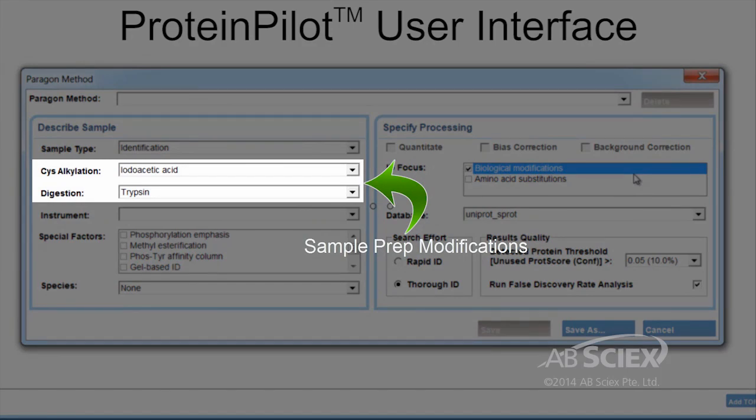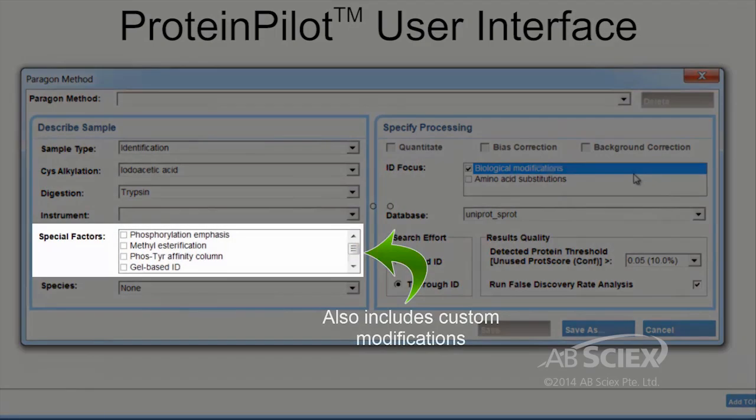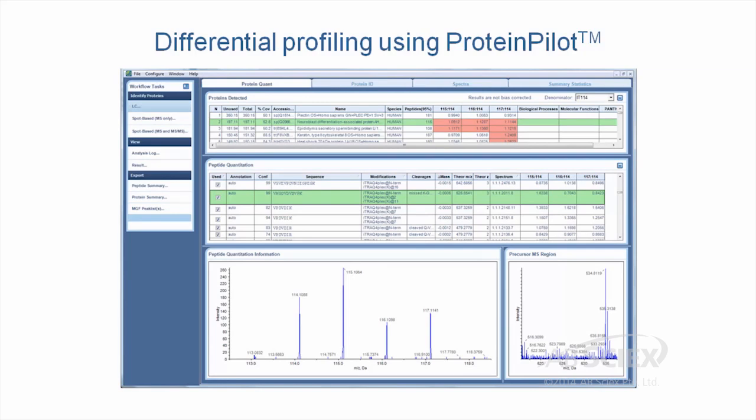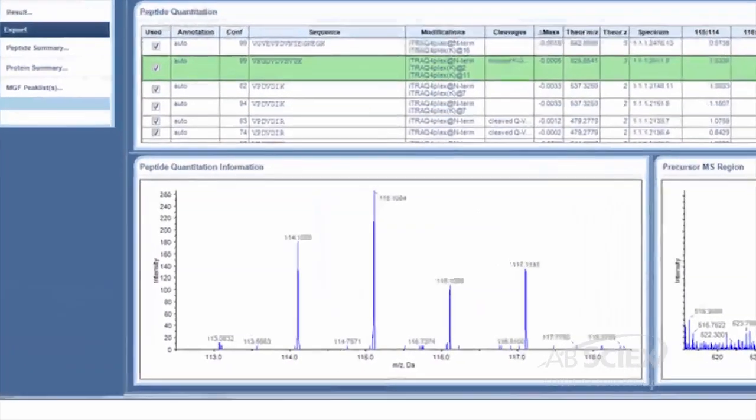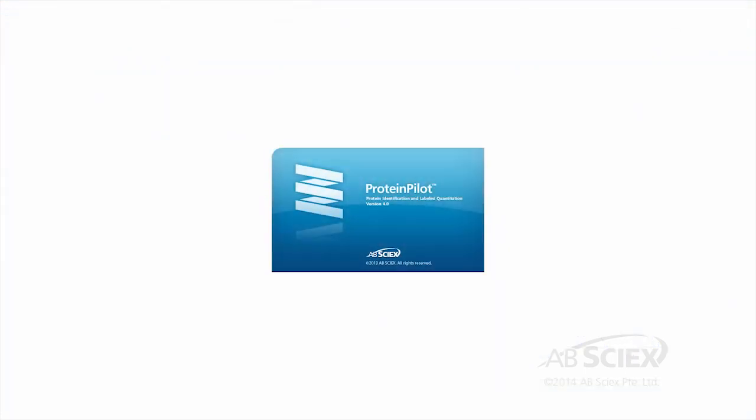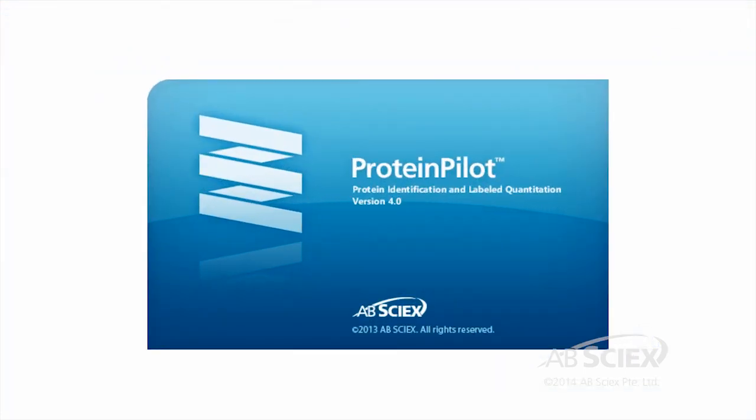This results in more peptides identified in any given search without a dramatic increase in processing time or number of false positives. In addition to discovery, ProteinPilot provides powerful quantitation and statistical tools for differential profiling using iTRAQ or SILAC strategies, providing a complete solution for the development of downstream quantitative methods.